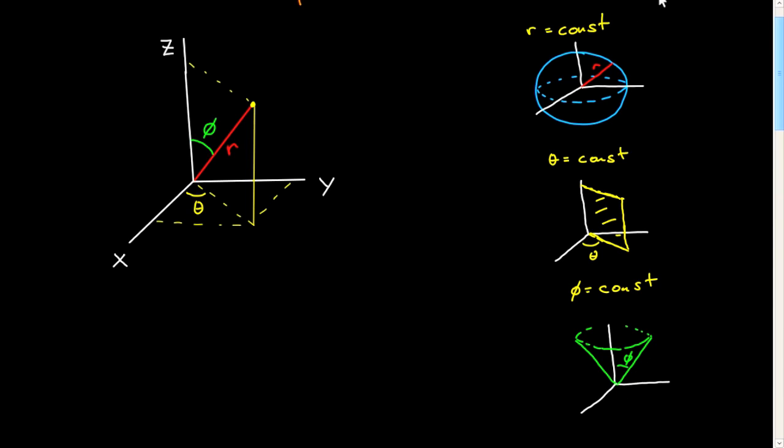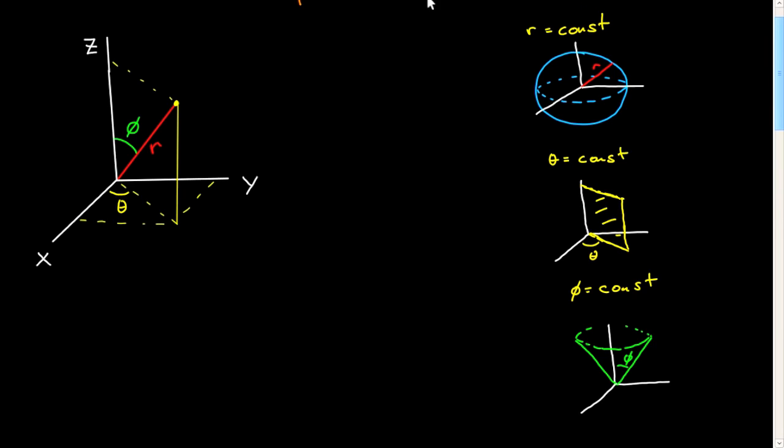So those are the three surfaces corresponding to constant coordinates in spherical coordinates. I think what's also instructive is to draw with pairs of these equal to a constant. I want to draw two pairs.